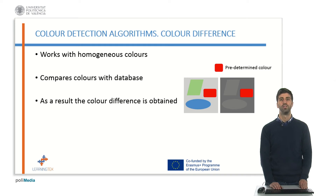Color difference functions are different from spatial color detection and color detection, because the function works with homogeneous colors. This function cannot segment colors, but compares homogeneous colors with a database created previously. The function shows as a result the difference between the selected color and the memorized colors. On the image on the slide, it can be seen how the function works with a predetermined red color.